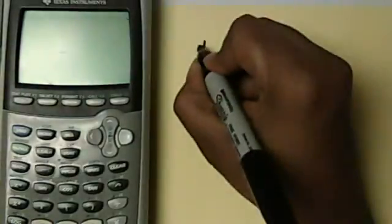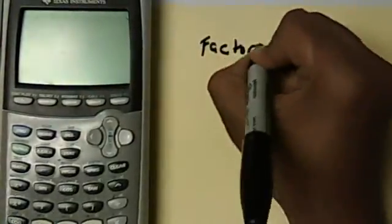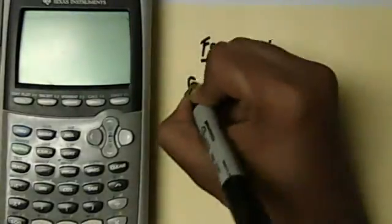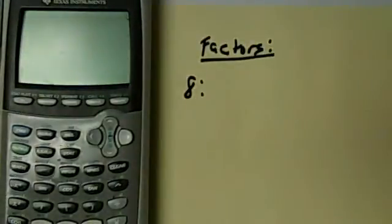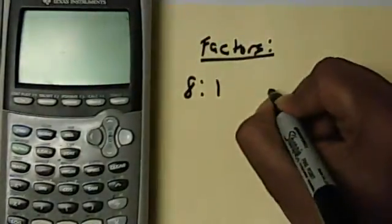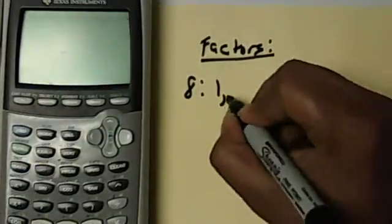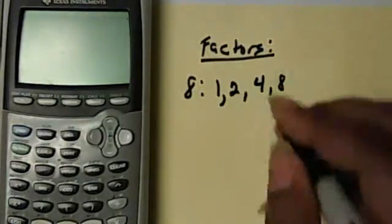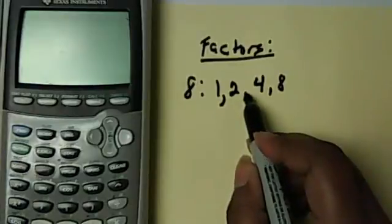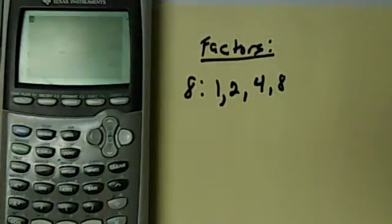So for example, if you had 8 and you wanted to find the factors of 8, you would list 1 times 8, and I'm going to try and spread them apart, 2 times 4, and then you would go to 3, but 3 doesn't divide it evenly.